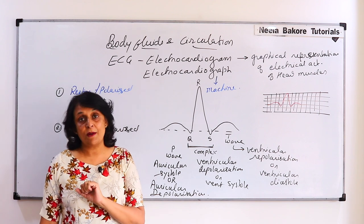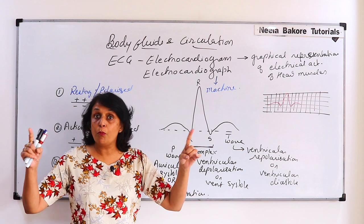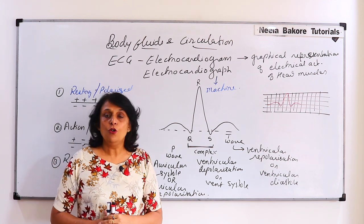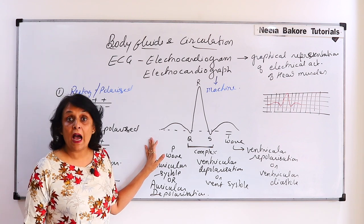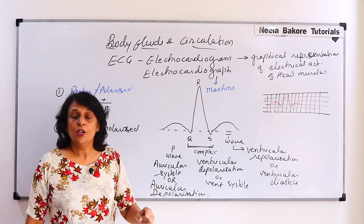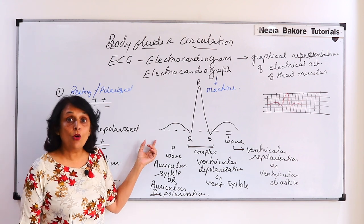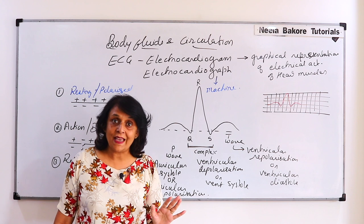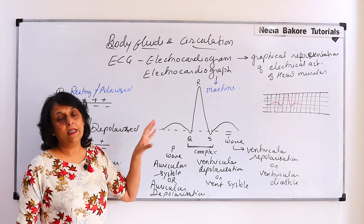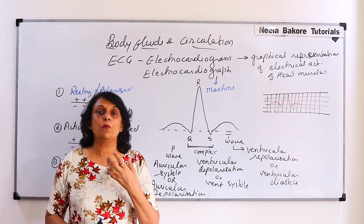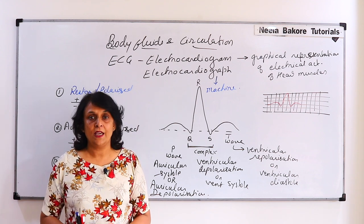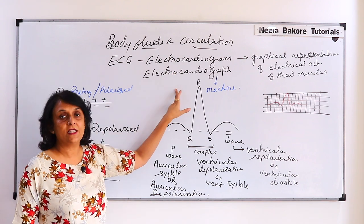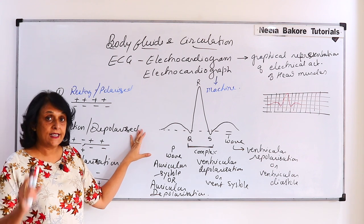If the ECG is not normal — meaning waves are short or broad — doctors can interpret what problem is present. If our heartbeat is not normal, then we have arrhythmia. Arrhythmia means that proper stimulus is not being generated at normal intensity. By doing ECG, doctors detect this and advise appropriate treatment or medicine.